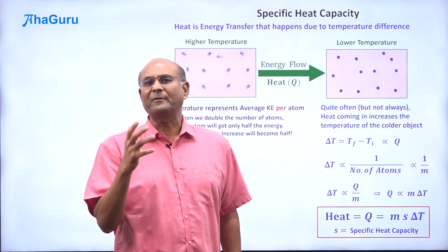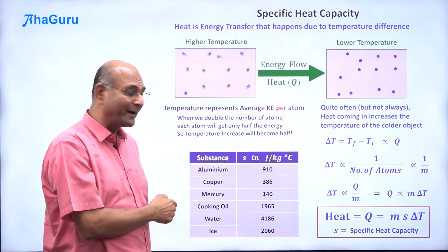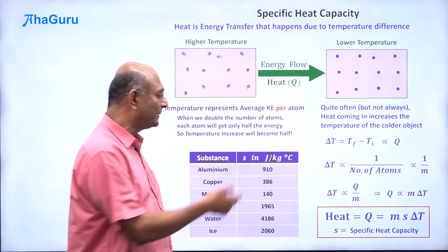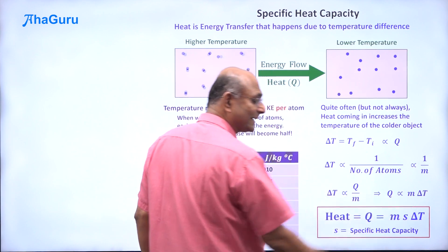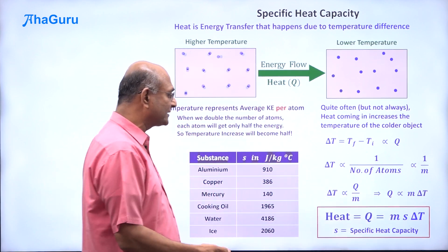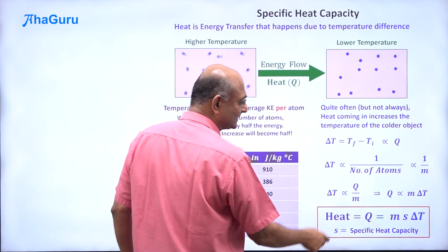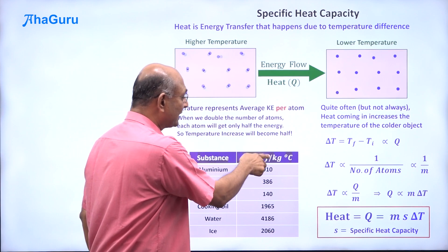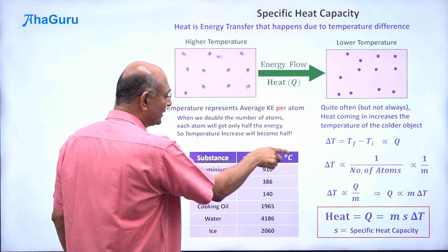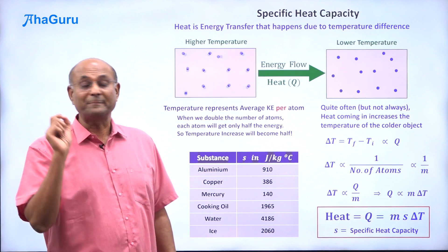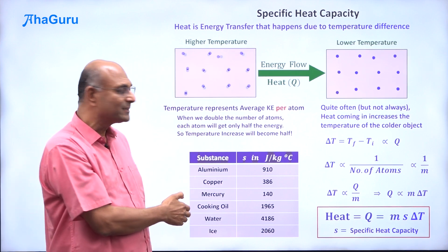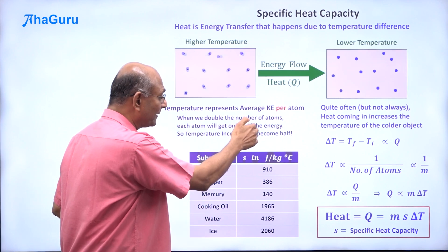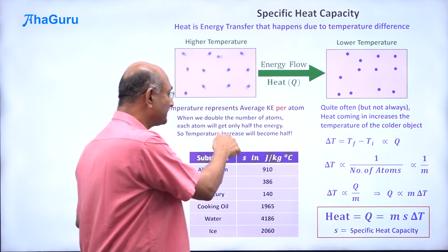What is the specific heat capacity of different objects? Well, obviously they are going to be different. The units: heat is just energy, so it will be in joules. Mass is in kilograms. Delta T will be in either Kelvin or degree Celsius. So specific heat capacity will be joules per kilogram Kelvin, or joules per kilogram degree Celsius — the SI units. Different substances will have different values for specific heat capacity; the size of the object doesn't matter as it is already included in the mass.